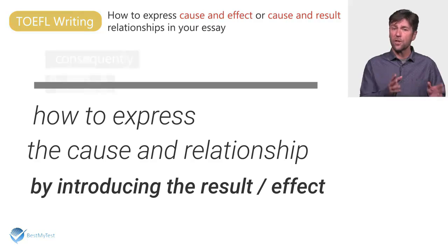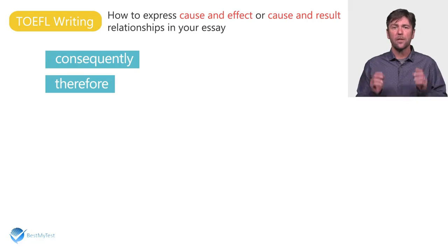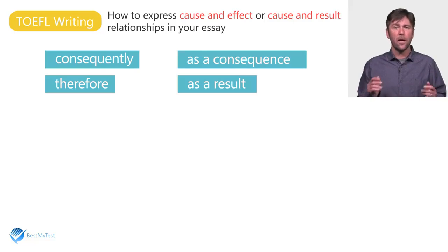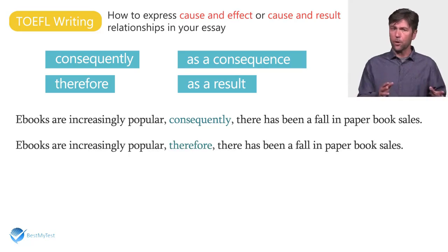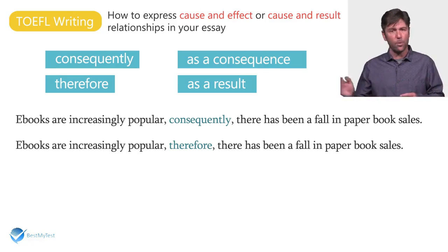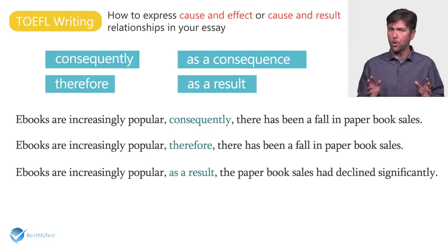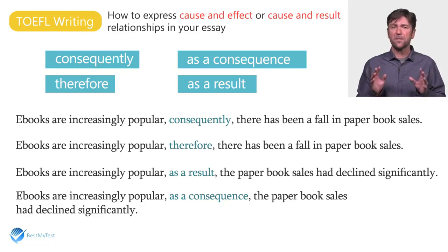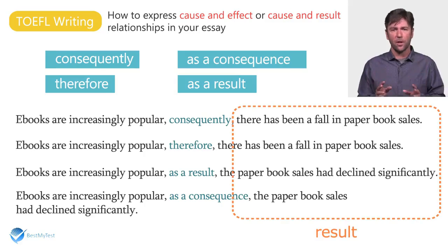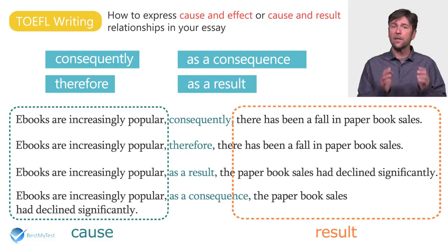The most common way to introduce the result is to use conjunctive adverbs such as consequently, therefore, as a consequence, and as a result. For example: E-books are increasingly popular. Consequently / Therefore, there has been a fall in paper book sales. E-books are increasingly popular. As a result / As a consequence, the paper book sales have declined significantly. As you can see, the sentence after the conjunctive adverb is the result, and the sentence before it is the cause.